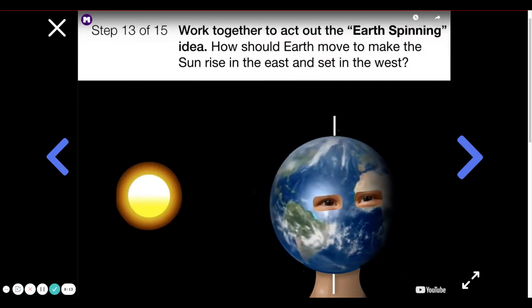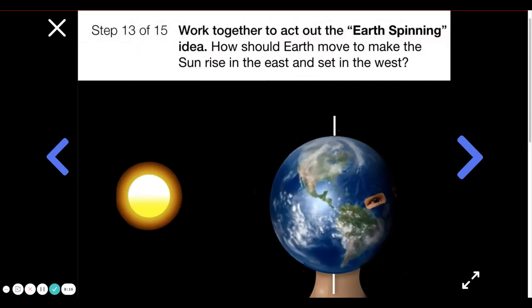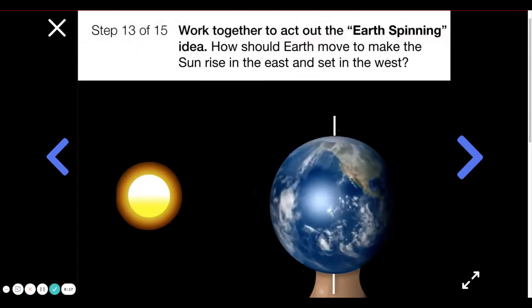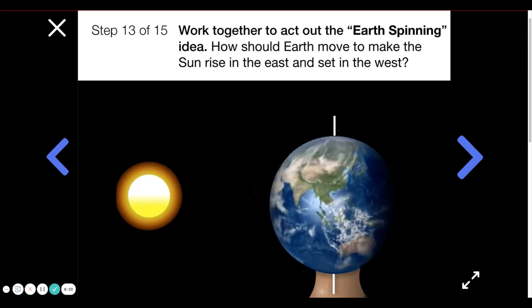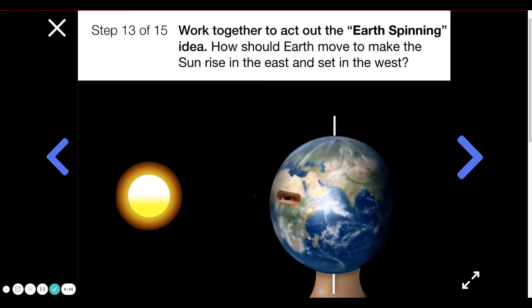Now work together to act out the earth spinning idea. How should earth move to make the sunrise in the east and set in the west? Once you get the hang of this, keep going until earth has seen at least three sunrises and sunsets.